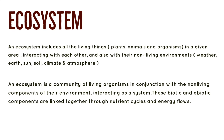This brings us to the next topic: ecosystem. An ecosystem includes all the living things — plants, animals, and other organisms — in an area, interacting with each other and also with the non-living environment such as weather, earth, sun, soil, climate, and atmosphere. An ecosystem is a community of living organisms in conjunction with the non-living components of the environment, interacting as a system. These biotic and abiotic components are linked together through nutrient cycles and different energy flows.